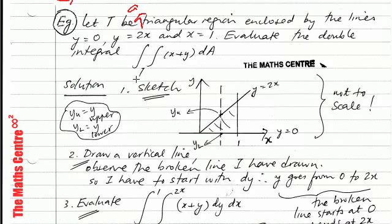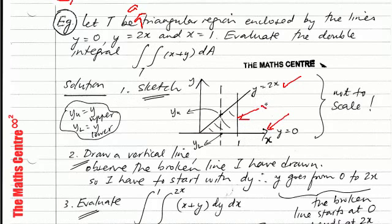The first step in a problem like this is to have a sketch. Draw in y equals 2x — that's a straight line going through the origin. Then we have y equals 0, which is the x-axis, and x equals 1, which is a line parallel to the y-axis. We are talking about the triangular region enclosed by these lines, so I've shaded it. Note this is not to scale. A sketch is extremely important when we evaluate double integrals.